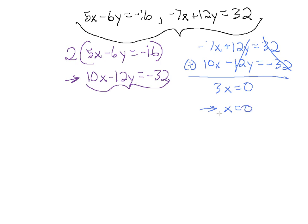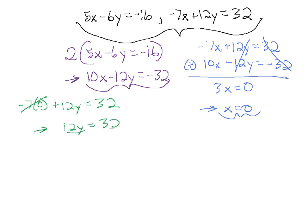We can divide both sides by 3, so x equals 0. That's not a problem — getting a value of 0 for one of our variables means the solution is the y-intercept, where the line crosses the y-axis. Let's plug x equals 0 into the second equation: minus 7 times 0 plus 12y equals 32. Those terms cancel, leaving 12y equals 32. Dividing both sides by 12 gives y equals 32 over 12.